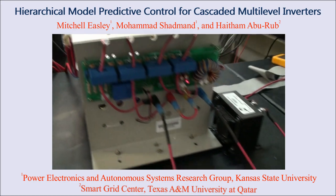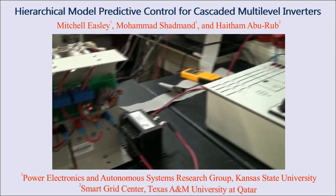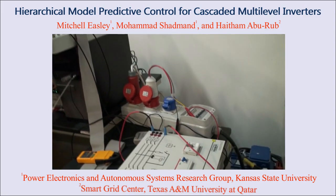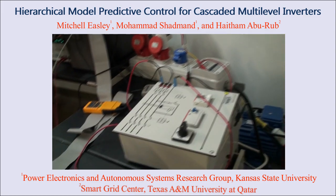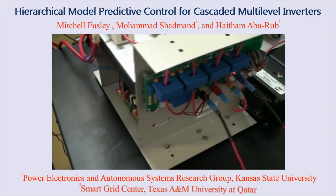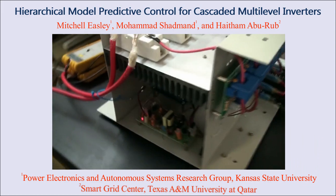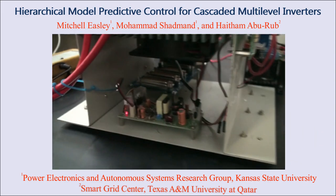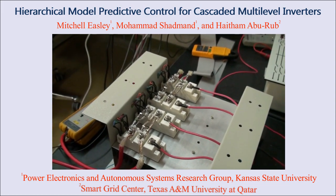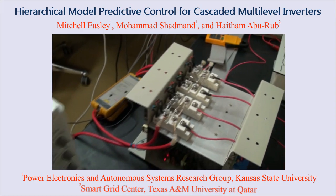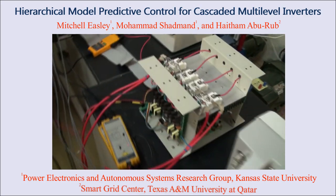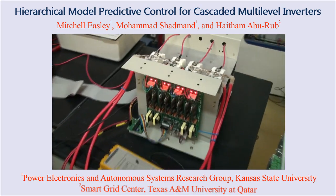This video demonstrates the performance of a hierarchical model predictive control scheme for a grid-connected cascaded H-bridge inverter. With hierarchical model predictive control, the traditional cost function is removed and the control objectives are optimized hierarchically. Each objective is ranked and a cost tolerance is specified for each objective. Control actions that do not meet the defined cost tolerance of an objective are removed from the optimization set of the following objective.